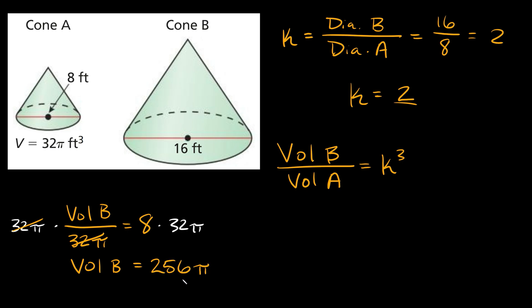So here we have 256 pi. If you plug this into your calculator, 256 times pi, you'll get that this is equal to approximately 804.2, or 804.8. And our units, don't forget our feet cubed. Boom.